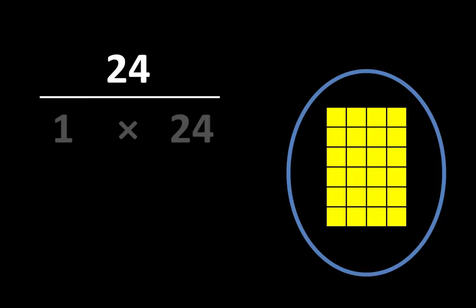To help us get started in seeking out connections, here is the number 24. I'll represent it with 24 small squares: 4, 8, 12, 16, 20, 24. We can think of this as one group of 24. After all, there is one group and the total is 24. I'll record that here. This says 1 times 24 — there is one group of 24.